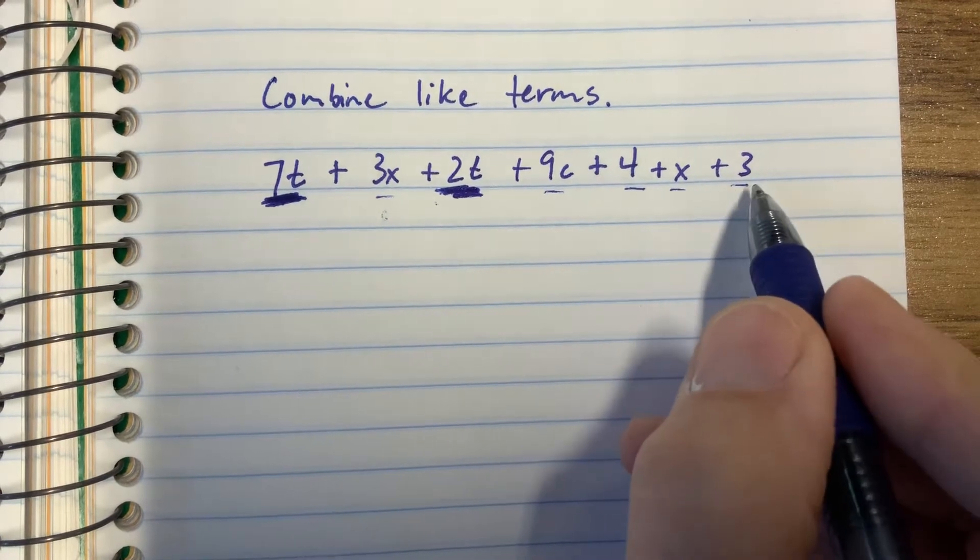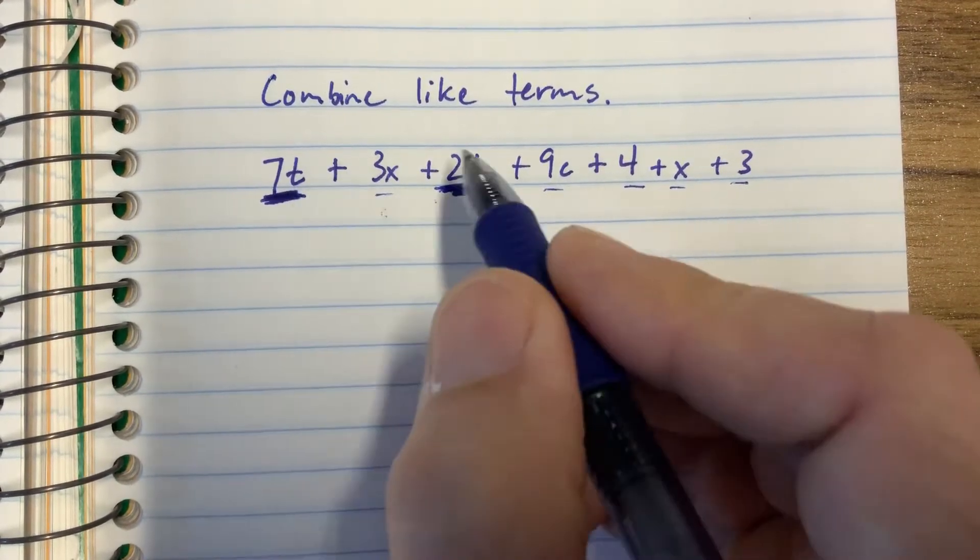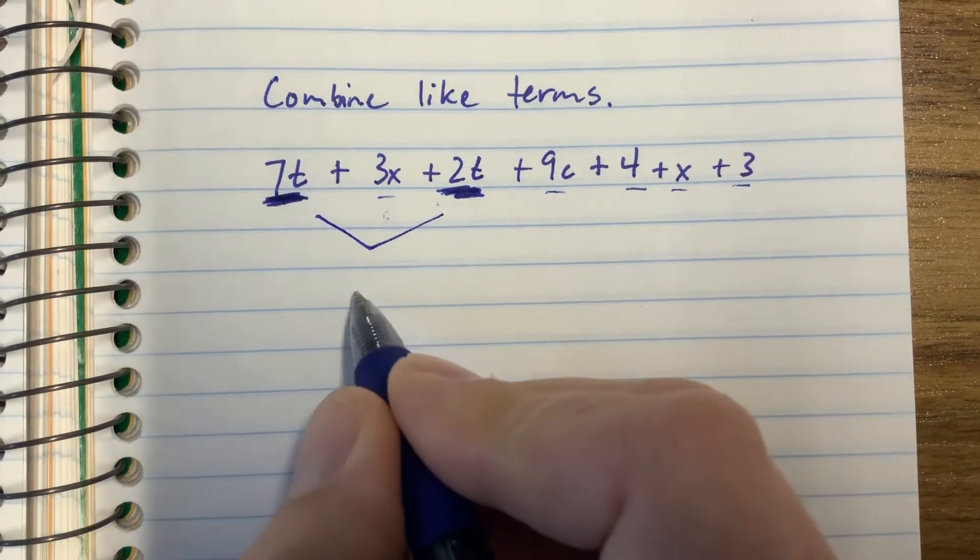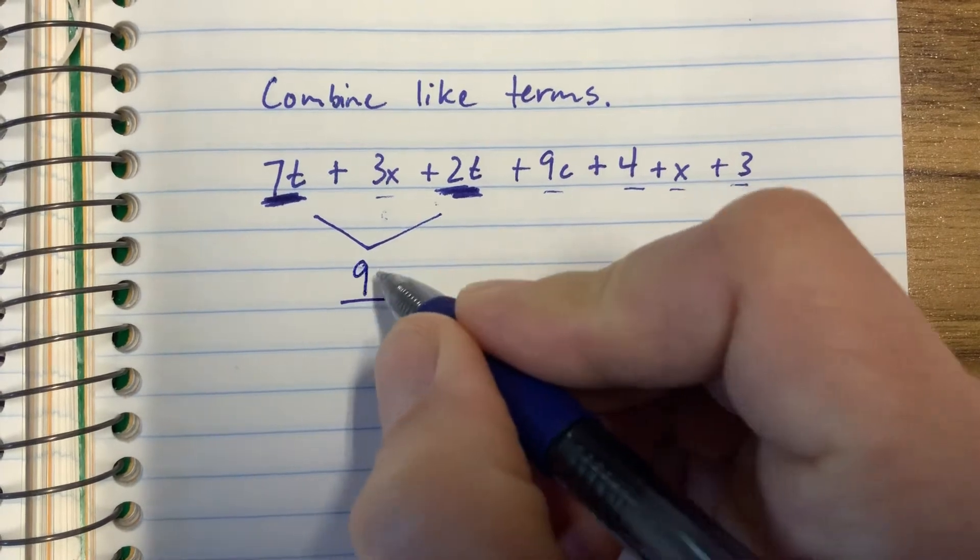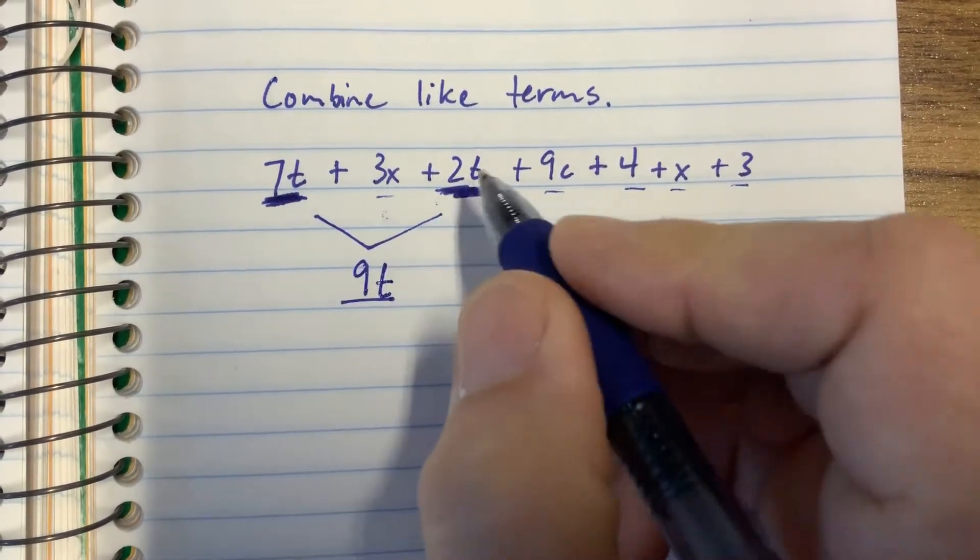9c, nope, 4x, 3. So only the 7 and 2. I can combine both of those through addition because it says adding. So I'm going to get 9t because 7 plus 2 is 9.